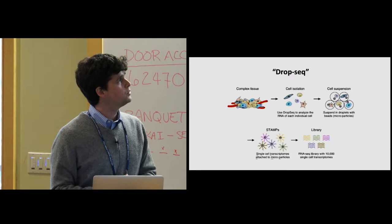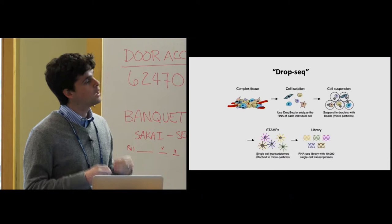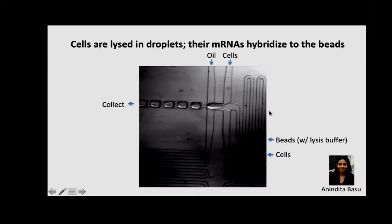Armed with this reagent, we decided to take it into droplets and see if we could make it work. We take a complex tissue, dissociate it into single cells, then incorporate those cells into droplets alongside a bead. When a bead and a cell happen to be in the same droplet, the RNA is released and hybridizes to the bead surface. We then pool all the beads together, perform reverse transcription in bulk, and generate what we call STAMPs — Single-cell Transcriptomes Attached to MicroParticles. We can then take as many of these beads as we want, amplify them in a single reaction, and do NGS sequencing on thousands or tens of thousands of individual transcriptomes.